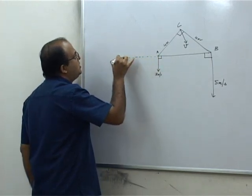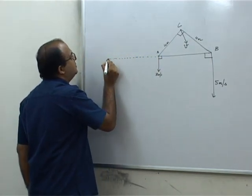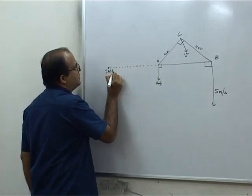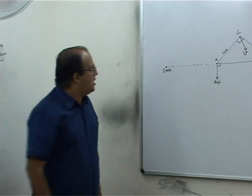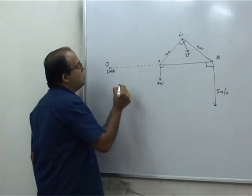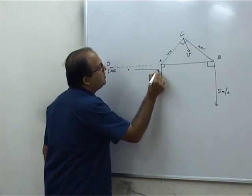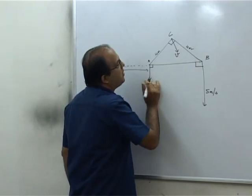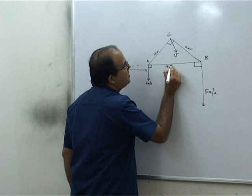So the instantaneous axis of rotation will be located somewhere here. Let us say this point is O, this distance is R. This distance we can easily find by Pythagorean theorem, that may be 4√2 meters.